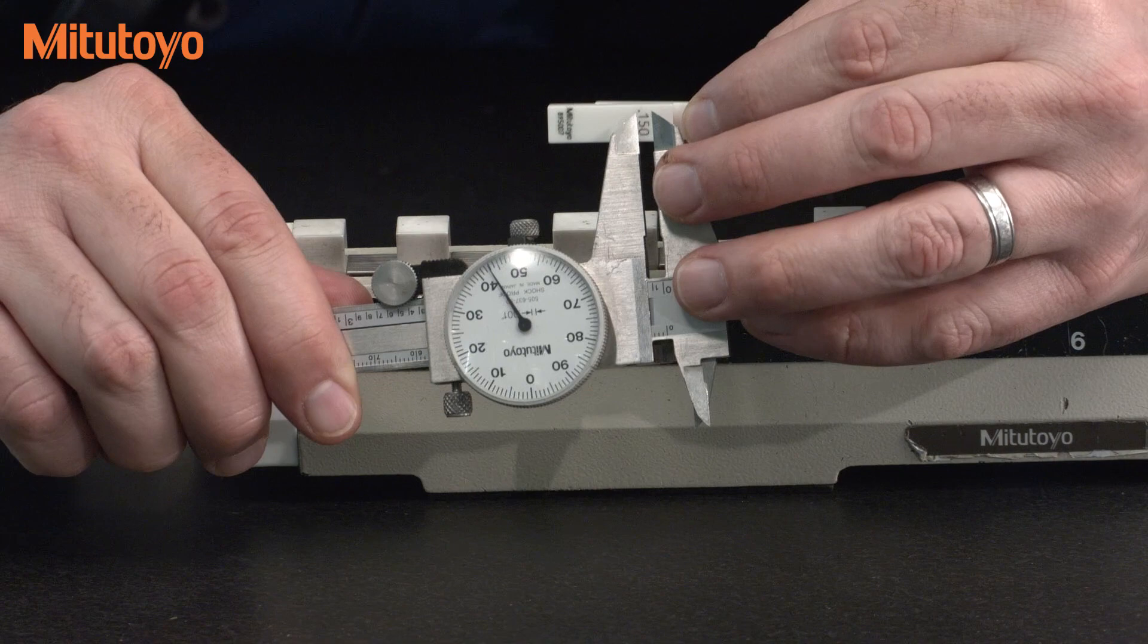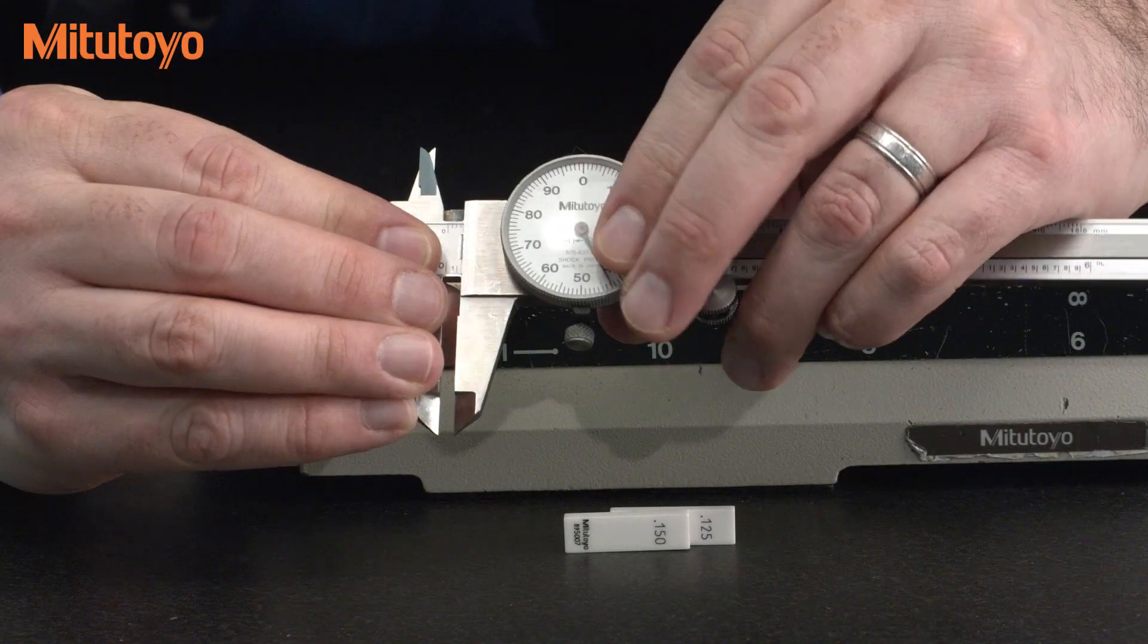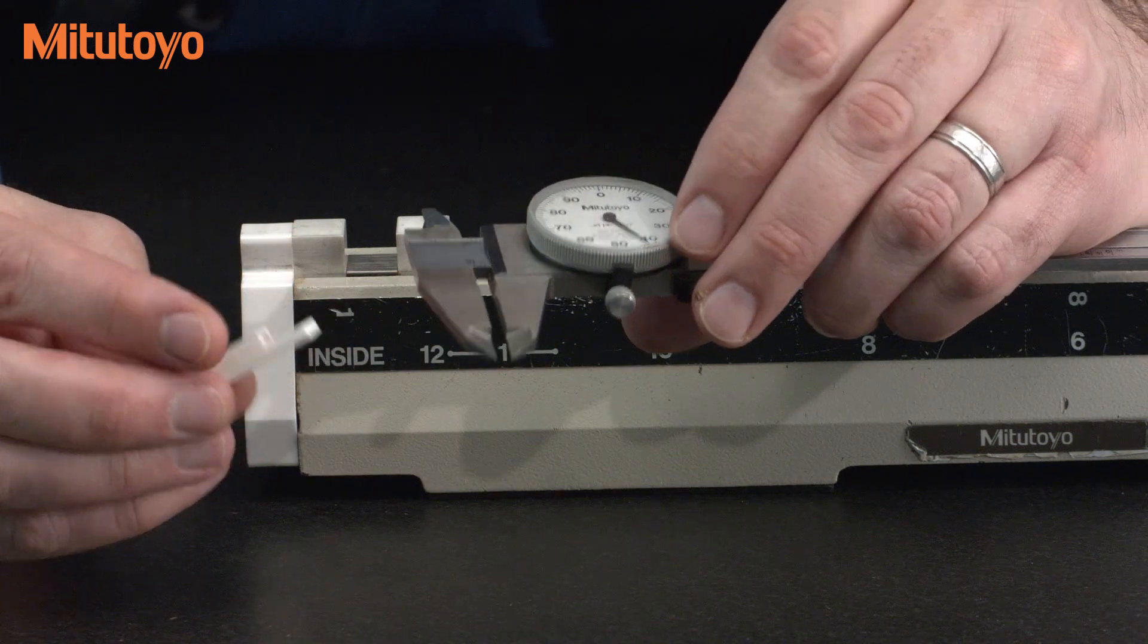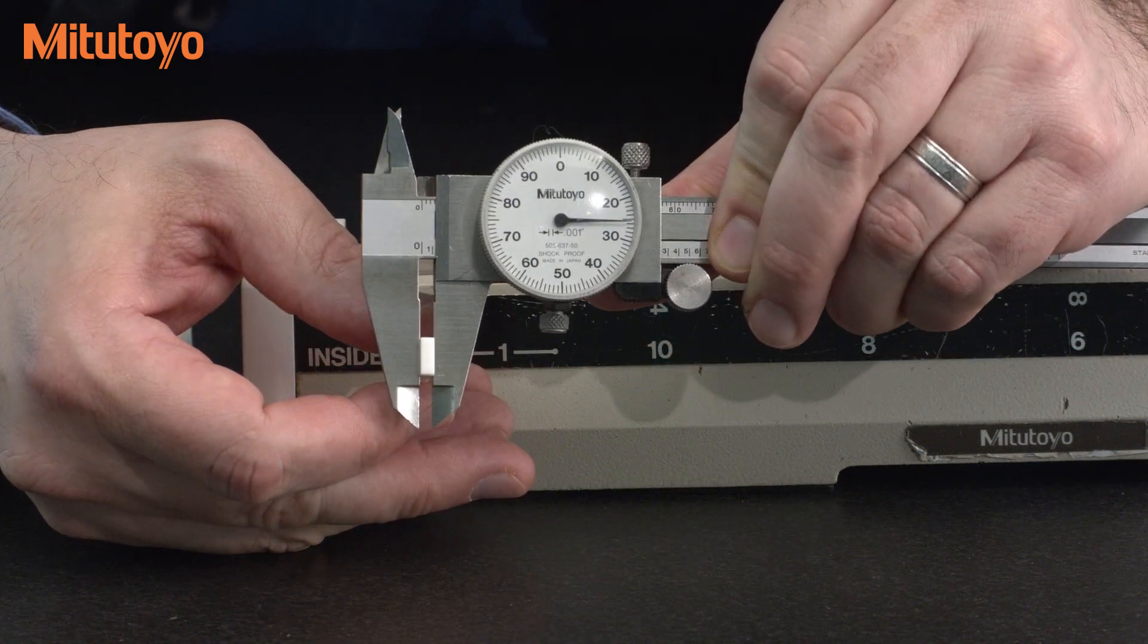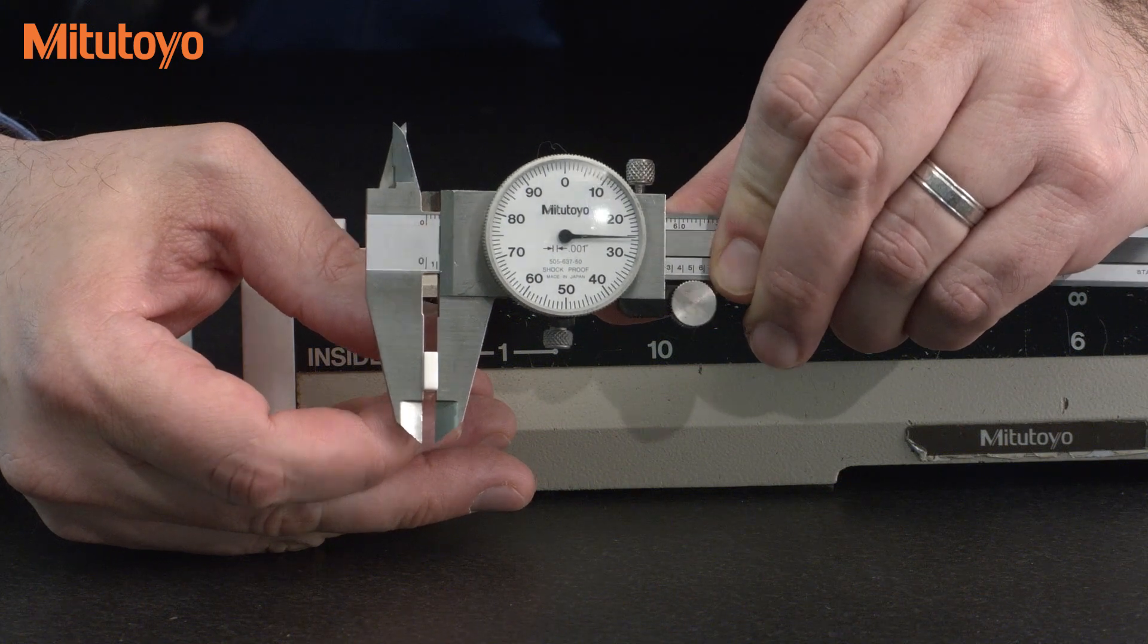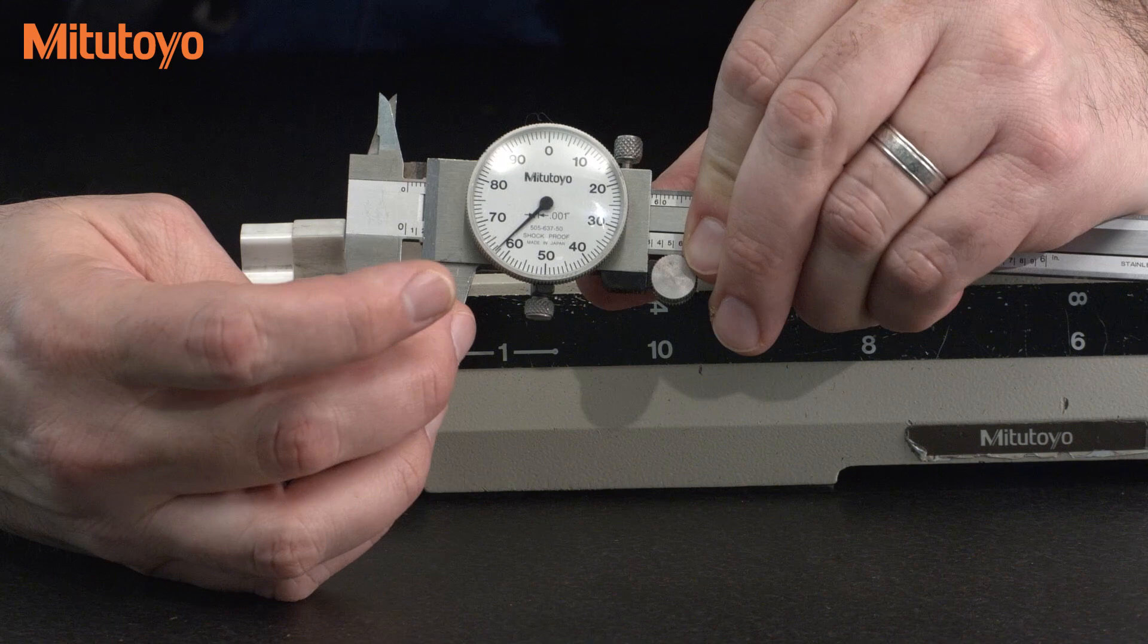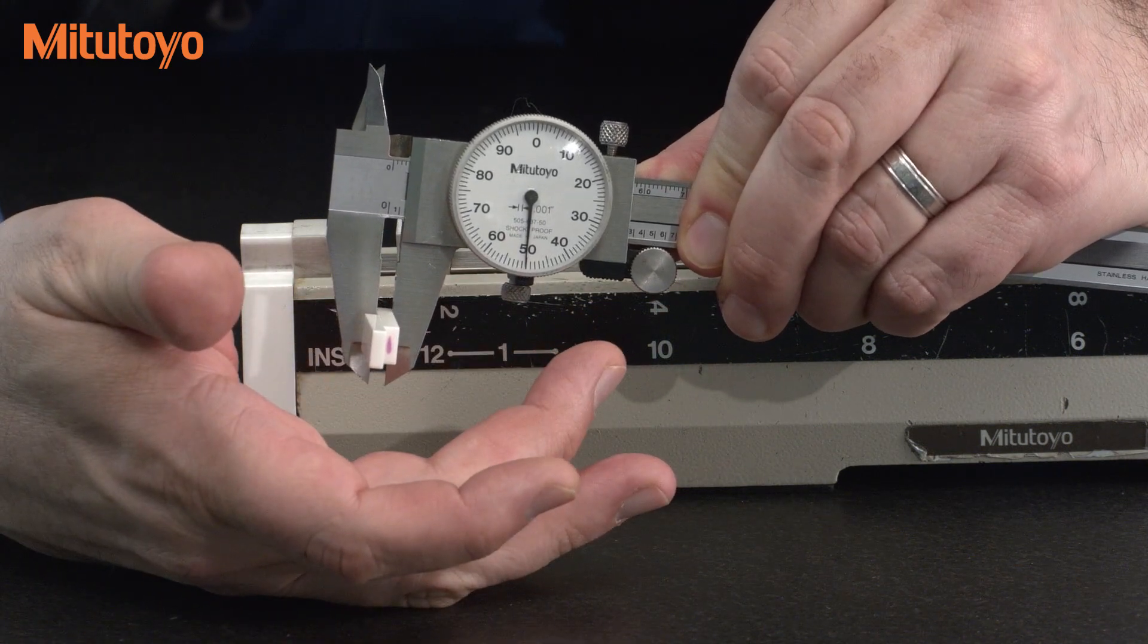For this style caliper, this inch size caliper, with the 125 block, if I was to measure that, I should be at the three o'clock position like you see here. If I measure the 150 block, I should be at the six o'clock position like you see here.